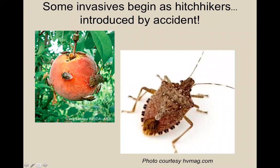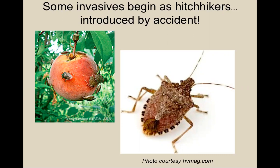Some invasives begin as hitchhikers — like the stink bug, accidentally introduced from China or Japan around 1998 on shipping crates. Stink bugs feed on a wide array of agricultural crops, inserting mouthpieces to suck out juices, causing fruit to rot across over 100 species. In 2010 in Pennsylvania alone, the stink bug caused over $37 million in apple crop damage, demonstrating both environmental and economic harm even from accidental introductions.